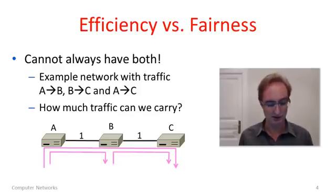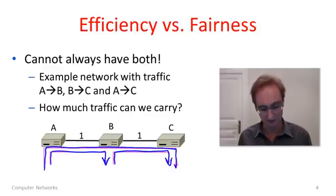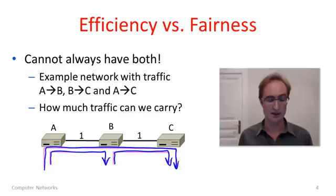We have these two different considerations: efficiency and fairness. One of the first things I want to tell you is that they're sometimes in conflict. It's not clear that we could always have both. Consider this example network. Here we have three hosts, A, B, and C, and three traffic flows. One is going from A to B over this link which has capacity of one unit. One's going from B to C, again it has capacity of one unit. And one flow is going all the way from A through B to C across those two links.